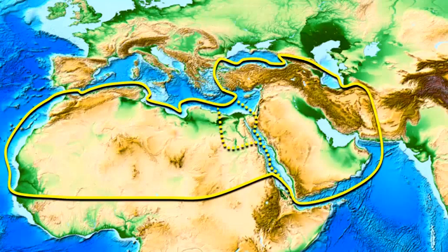What makes North Africa and the Middle East unique is that we have all three plate boundary types present. We've got convergence — plates colliding with each other. We've got divergence — plates spreading apart from each other. And we also have a small but notable instance of plates sliding by each other: transform fault boundaries.